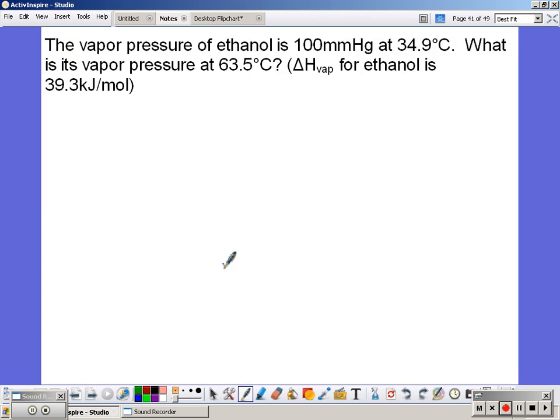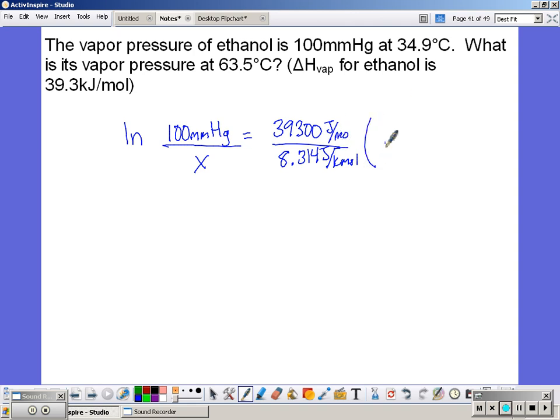So the vapor pressure of ethanol is 100 millimeters of mercury at 34.9 degrees Celsius. What is the vapor pressure at 63.5 degrees Celsius if the heat of vaporization for ethanol is 39.3 kilojoules? All right, so we're going to take the natural log of our pressure, 100 millimeters of mercury. And we want to know what the new vapor pressure is, so that will be our X. That's equal to the delta H, 39.3. Now the R value is the ideal gas law constant, 8.314 joules per kelvin mole. So I need to convert kilojoules to joules, and then we're going to multiply it by our temperatures. So we have to be in kelvin.